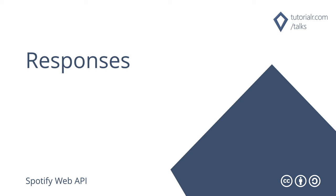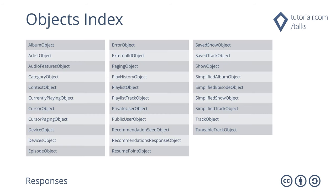Spotify Web API responses are returned in JSON format and with HTTP status codes for success or any error. The Objects Index features the responses which include Album Object, Artist Object, Playlist Object, Track Object and more, or an Error Object.